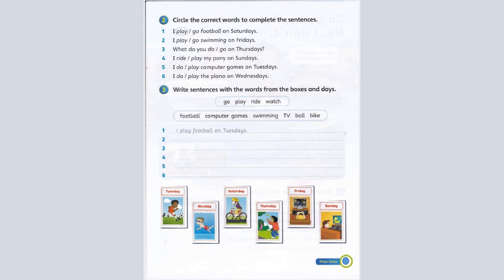For example, number one: I play football on Tuesdays — do you see the picture with a boy playing football? It says Tuesday, so the sentence is I play football on Tuesdays. Number two, look at the picture of a boy in the water. What do you think he does? Use go, play, ride, or watch, and from box two — computer games, swimming, TV, ball, or bike. You'll also notice it's written Monday. Do the rest of the exercises the same way.